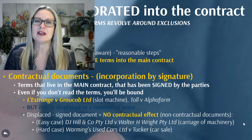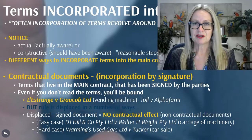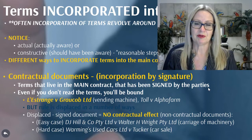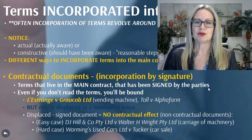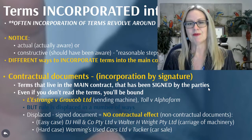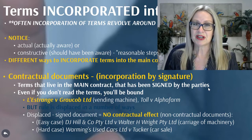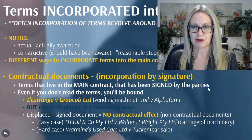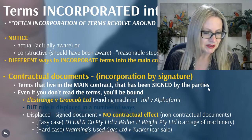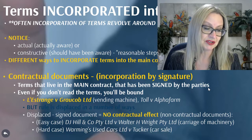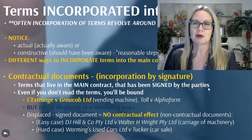That's the traditional way you start a discussion of incorporated terms. If you've signed the document, because signature is such a serious undertaking, you'll probably be bound by it even if you haven't really read the terms properly. The main authority here is L'Estrange v Graucob, which involved the sale and purchase of a cigarette vending machine in 1934. The contract included a merger clause, which we've already discussed in our second video on the Parol Evidence Rule. That clause read: 'This agreement contains all the terms and conditions under which I agree to purchase the machine specified above, and any express or implied condition, statement or warranty, statutory or otherwise, not stated herein is hereby excluded.'